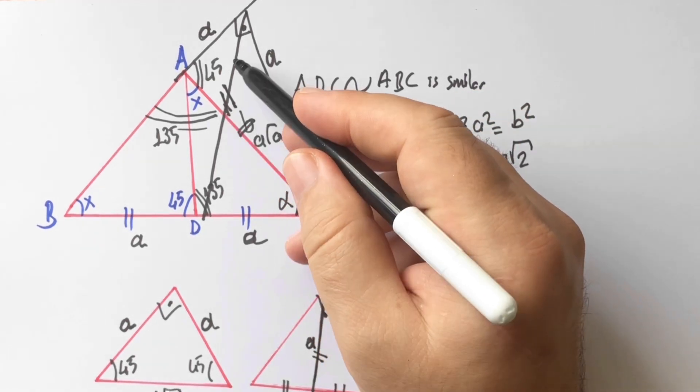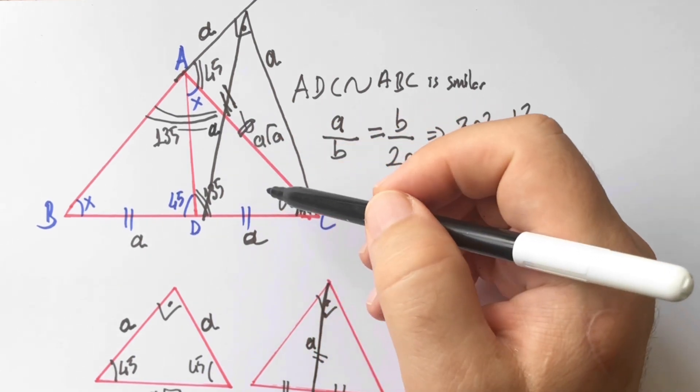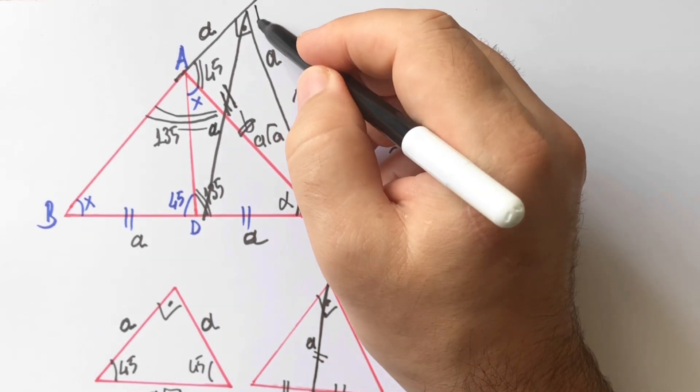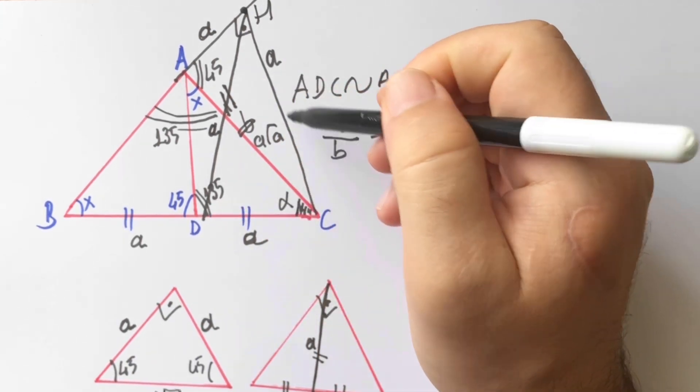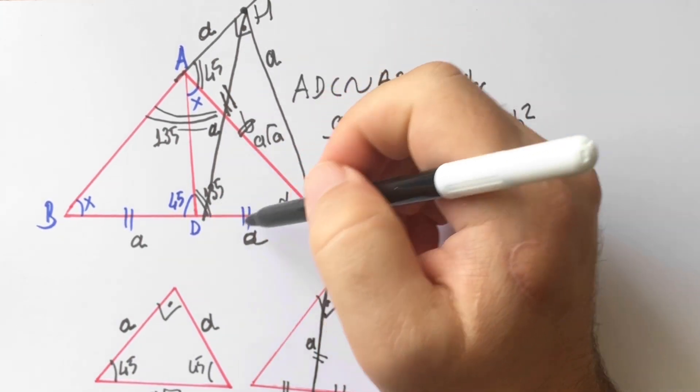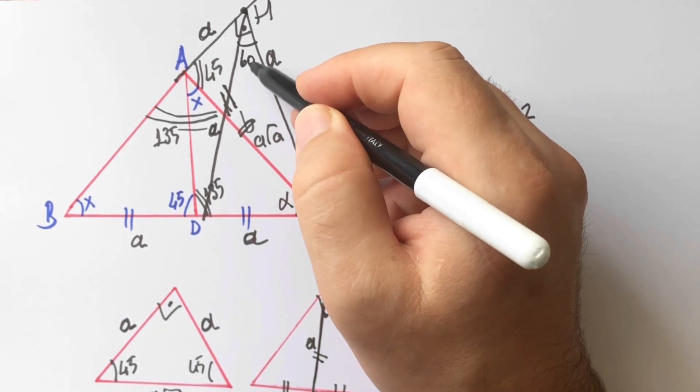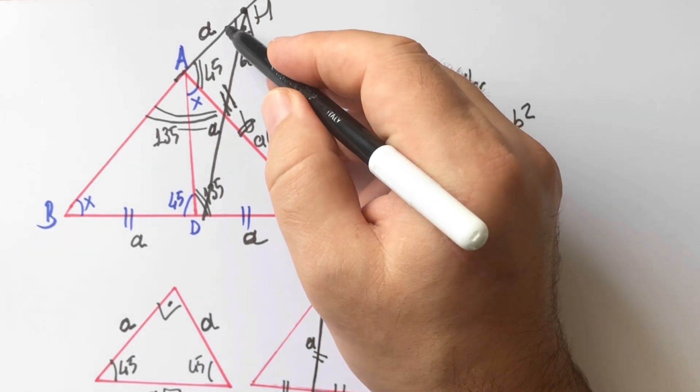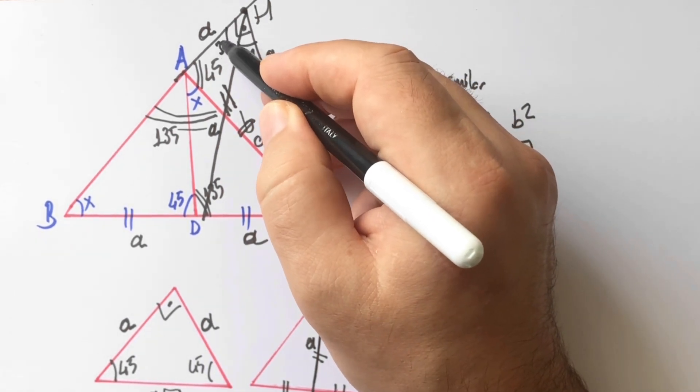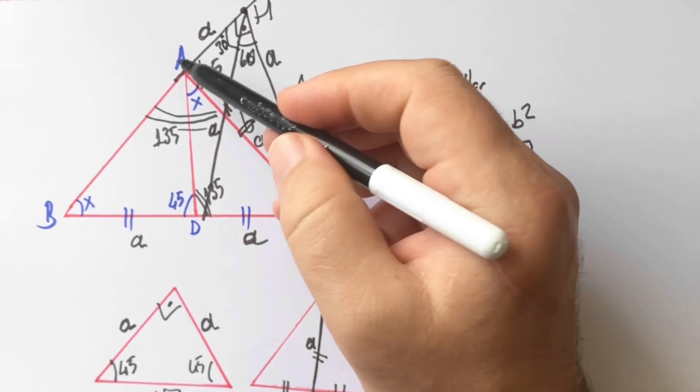So here must be A units. Let's call here H point. HDC triangle is an equilateral triangle, so all the angles are 60 degrees. So left of this, here is 30 degrees. And as a result, let's draw the triangle.